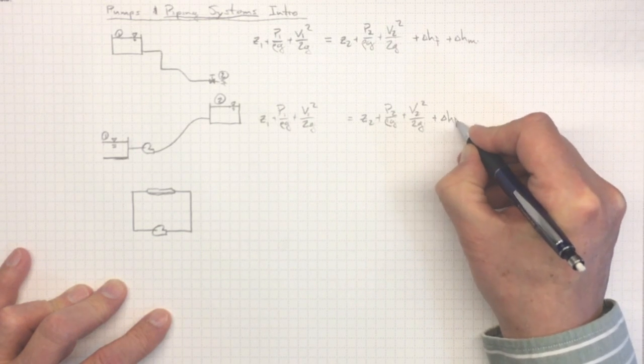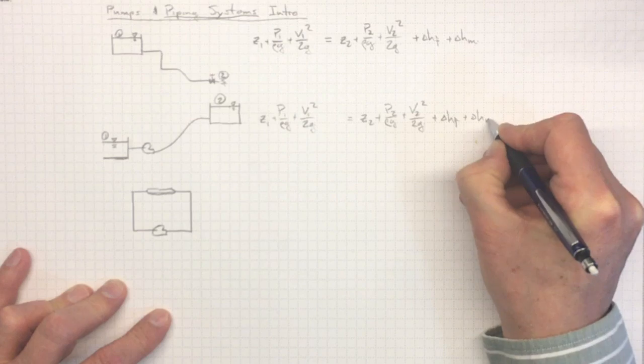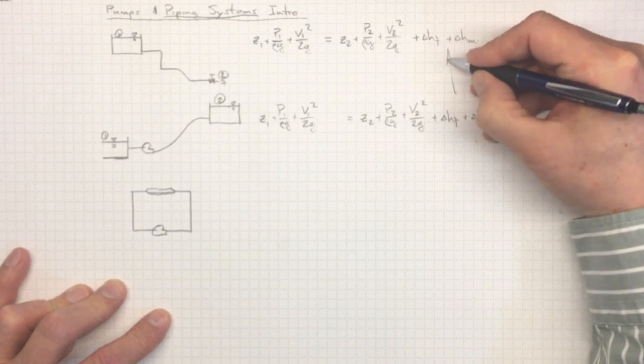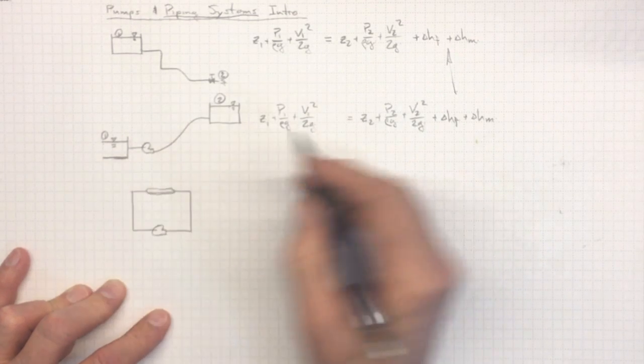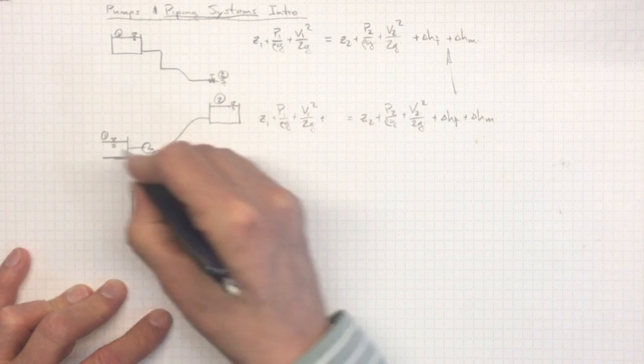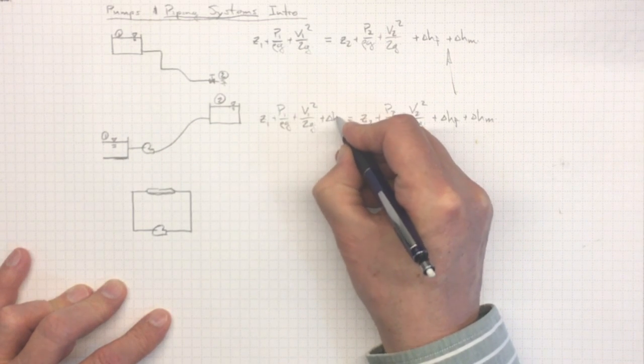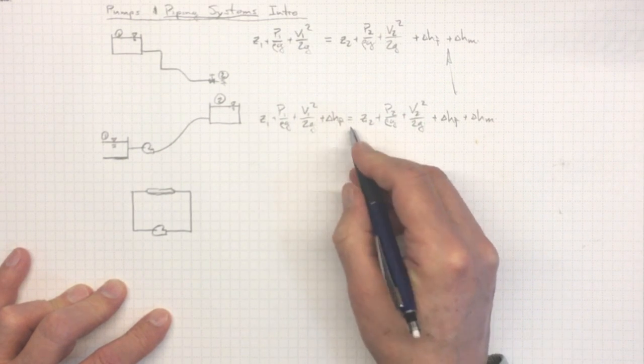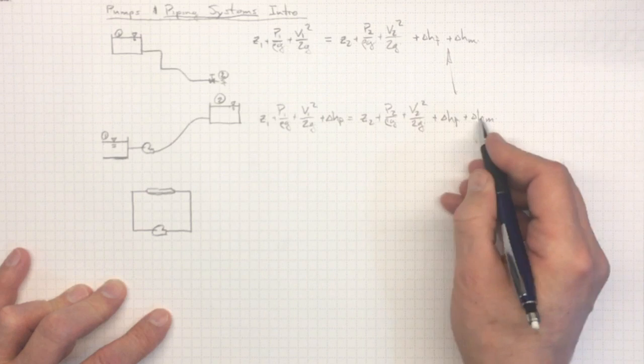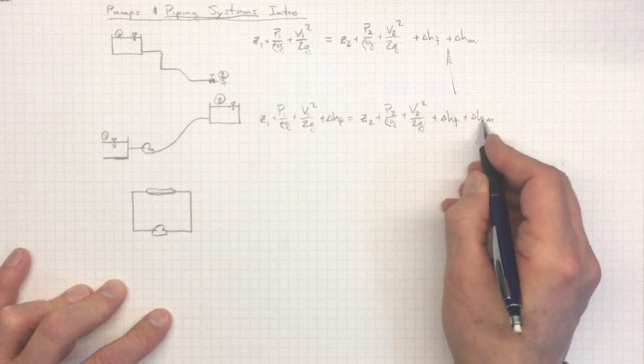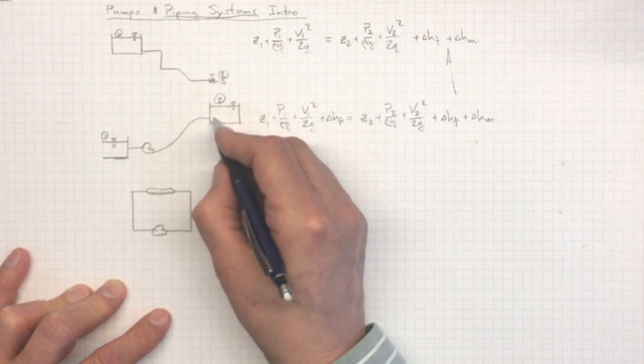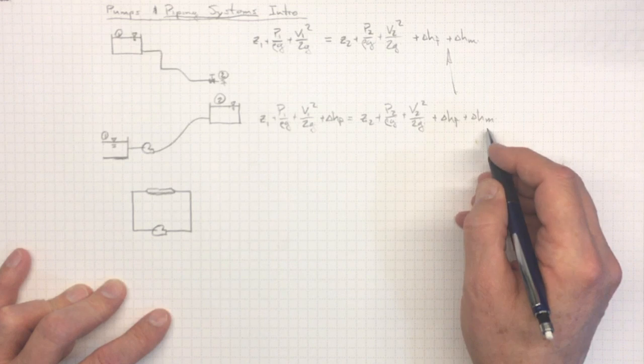Less whatever we lost due to friction and minor losses, exactly the same as we had before up here. But this time we've got a pump. So we're taking the energy that we had at one, we're adding energy through the head rise across our pump. And that's what we'll have at location two.